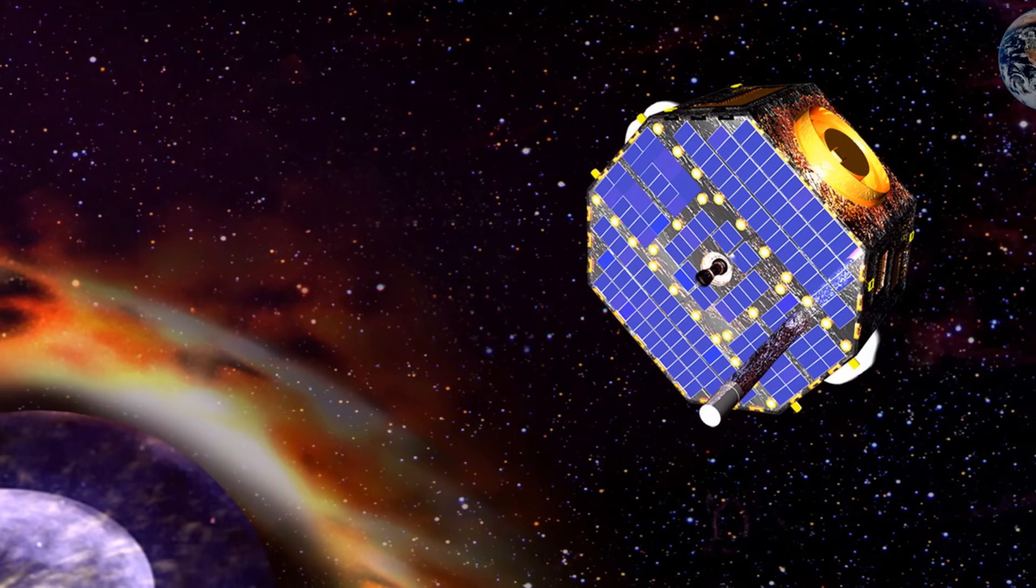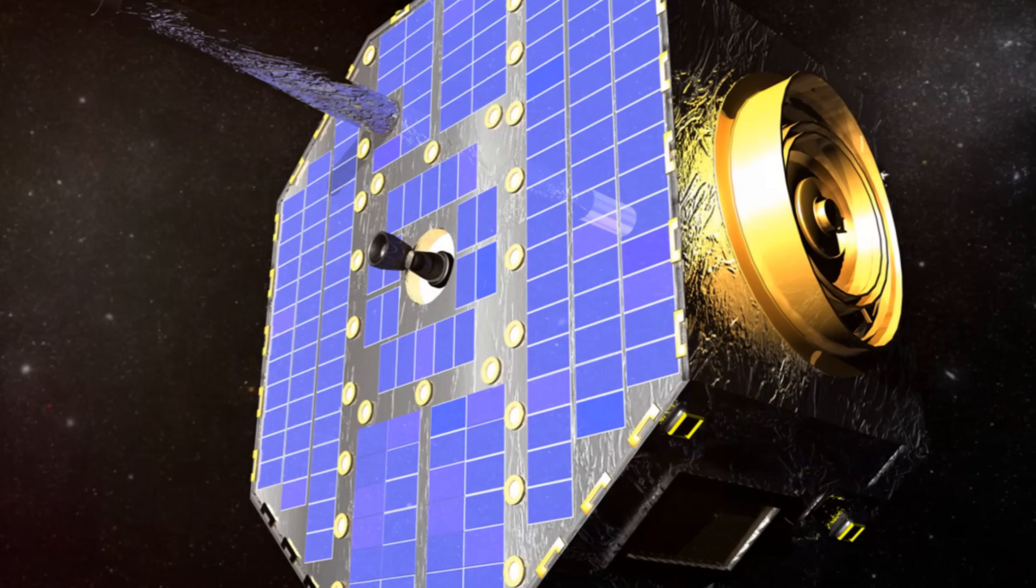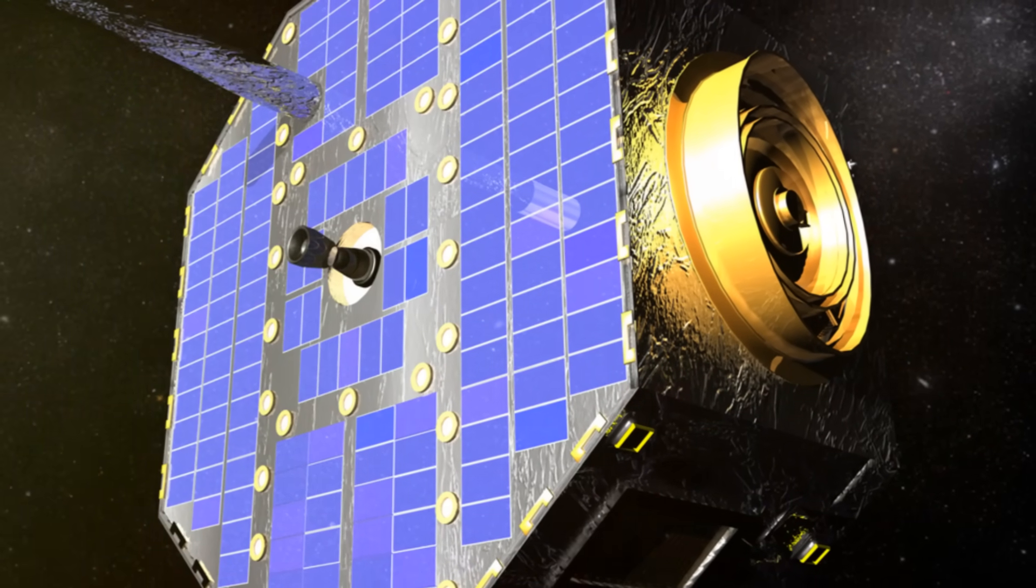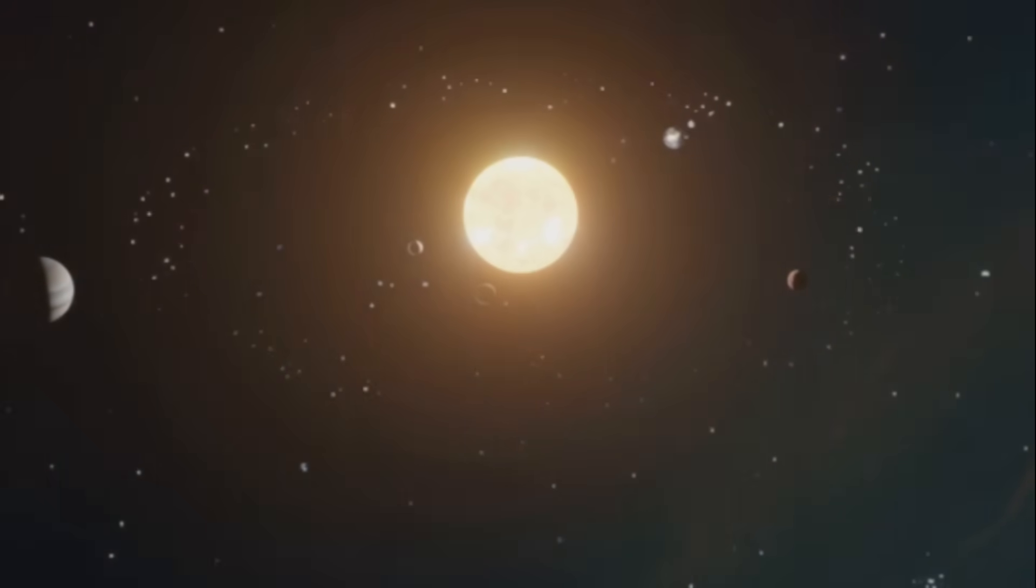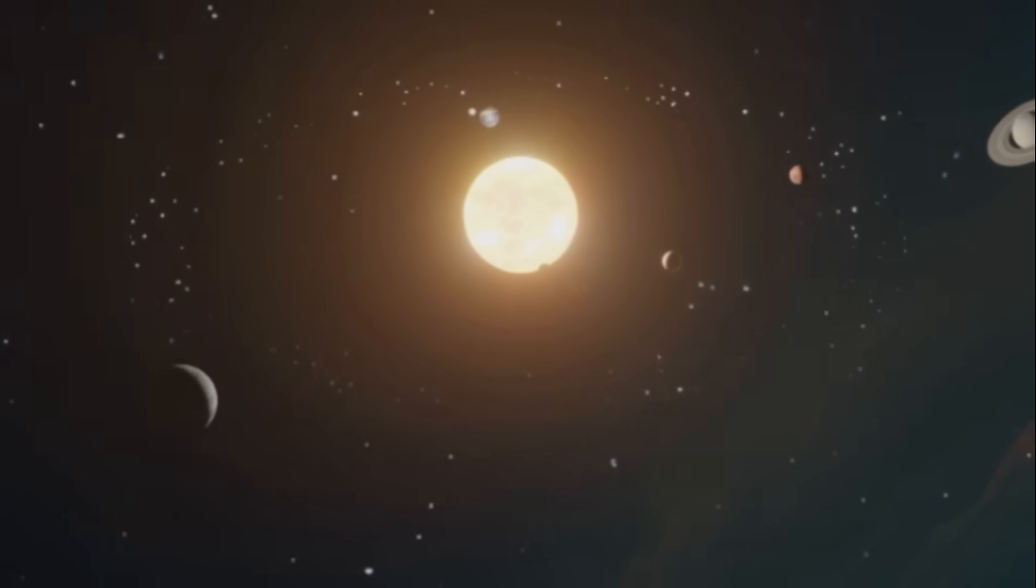Launched in October 2008, this small, car-sized spacecraft had a massive mission, to map the boundary of our solar system. Now you might be wondering, how does a spacecraft that has not departed our solar system manage to map its boundary? Well, it's all thanks to the power of energetic neutral atoms, or ENAs for short.